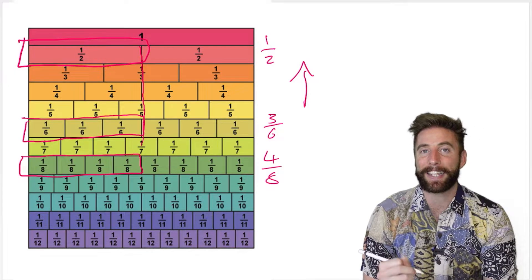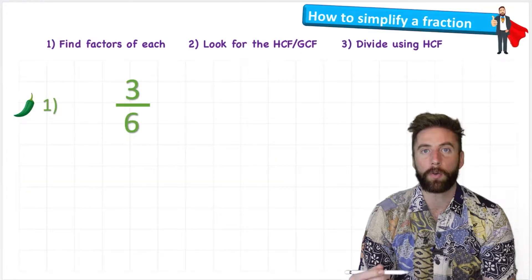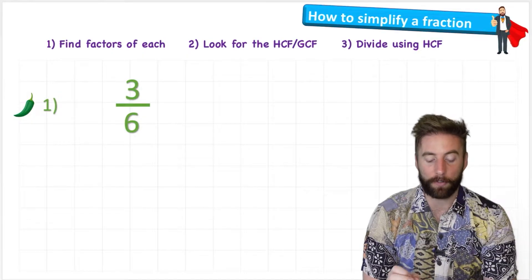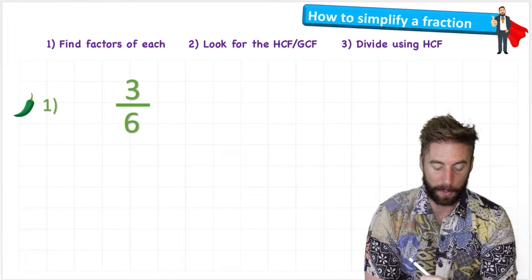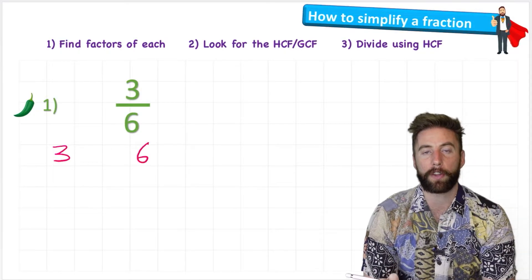So three sixths in its simplest form would be one half. But that's using a fraction wall. We're going to do it using a written method. So step one was to find factors of each. The easiest way to find a factor is to draw a factor tree. I'm going to have my three over here and my six over here, and I'm going to look for the factors.